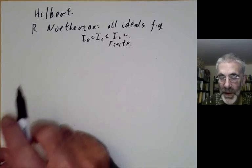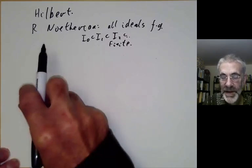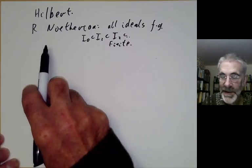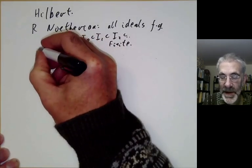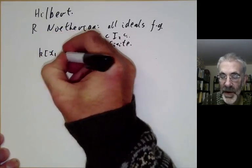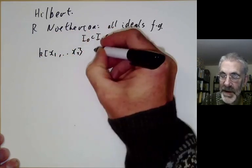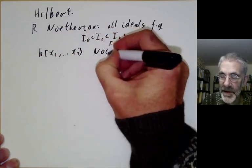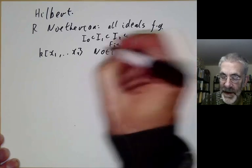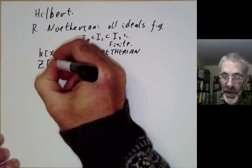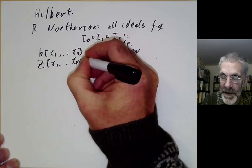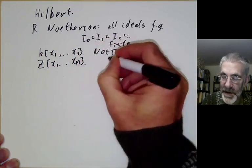We want to find more examples of Noetherian rings. In particular, we first want to prove Hilbert's theorem, which says that a ring of polynomials in several variables over a field is Noetherian. In fact, Hilbert also showed that even polynomials with integer coefficients give a Noetherian ring.